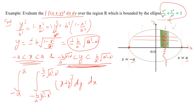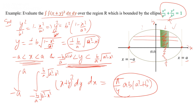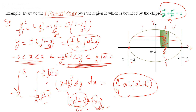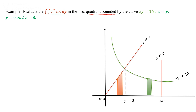When you evaluate that integral, you get the value (pi/4) ab(a squared plus b squared). You expand (x plus y) whole square as x squared plus y squared plus 2xy. The 2xy term is an odd function, so using the property of even and odd integrals and applying limits minus a to a, you get (pi/4) ab(a squared plus b squared).